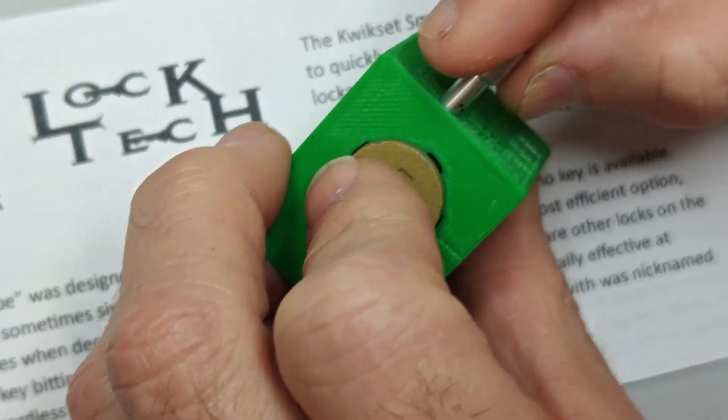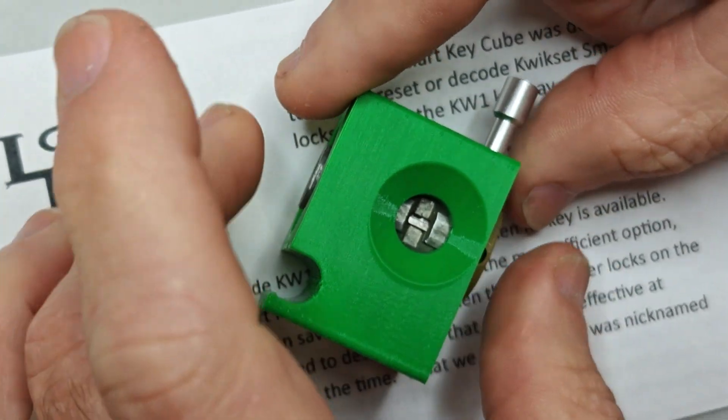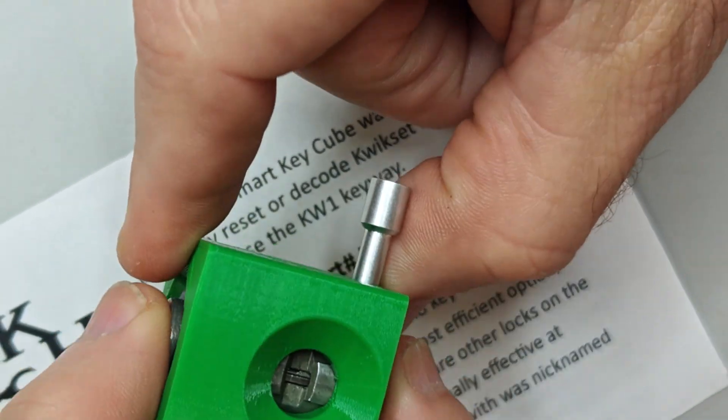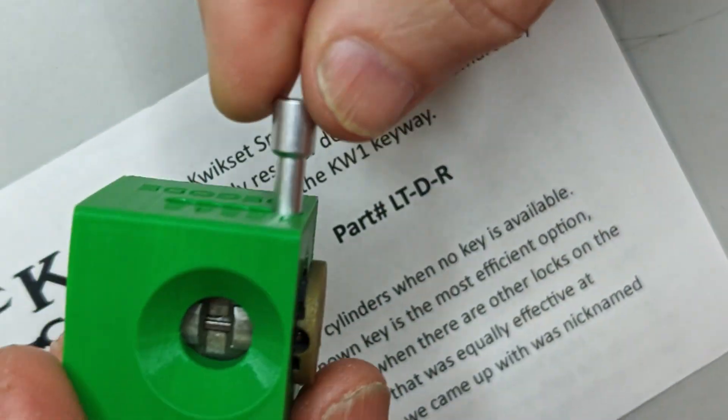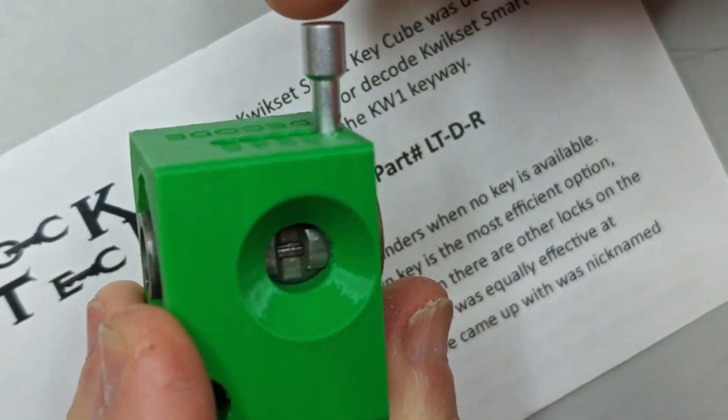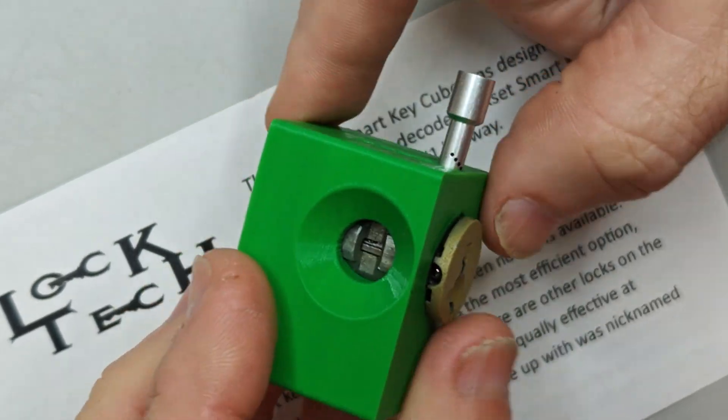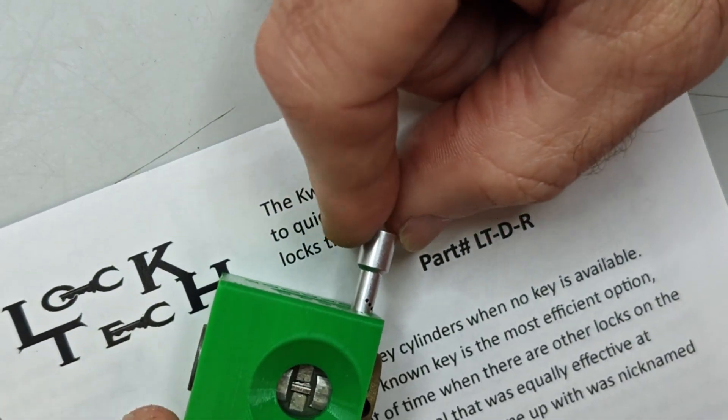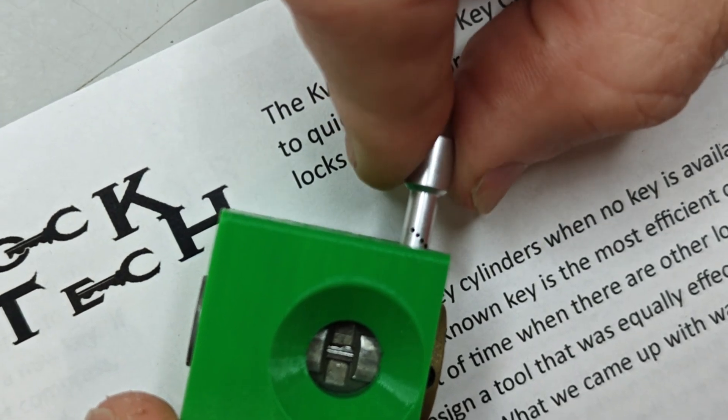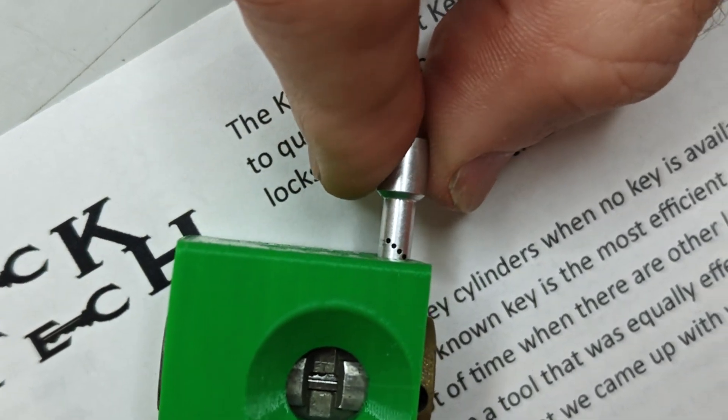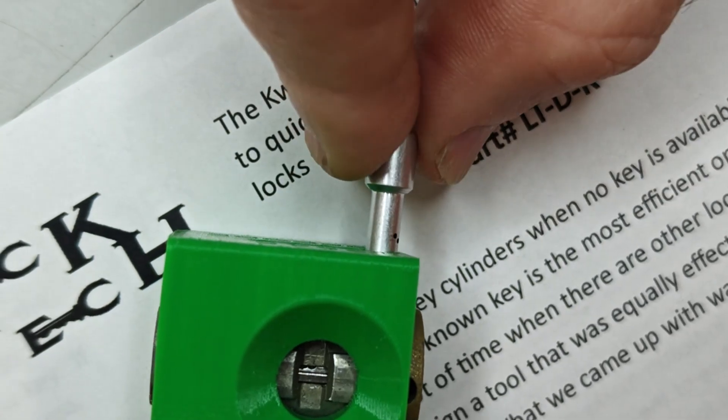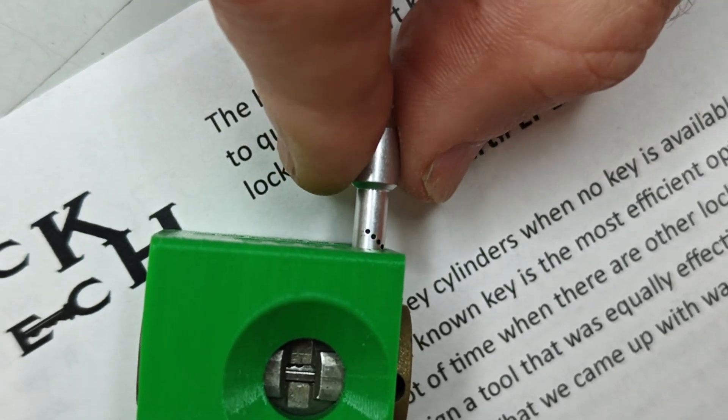What you're going to do is insert it into one and make sure that this sidebar is all the way down because it's going to push the cylinder counterclockwise when you push this in there. Then you're going to read the height of the wafers for however many are above the surface of the body. So in this case looks like four.